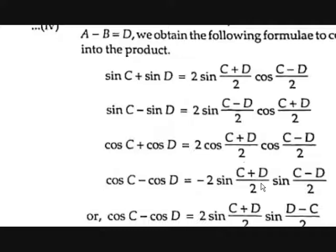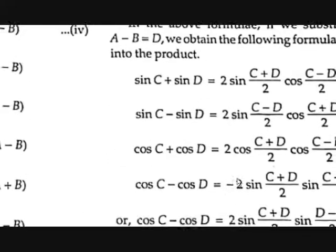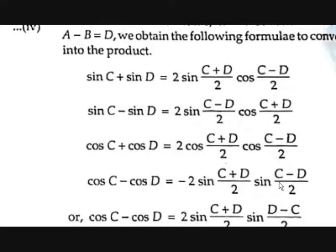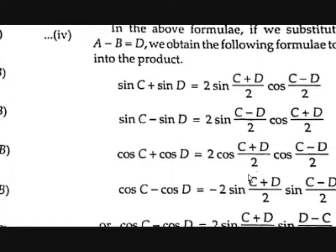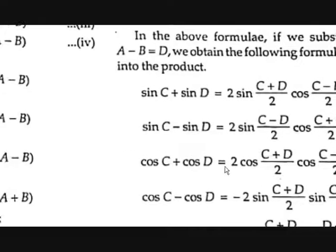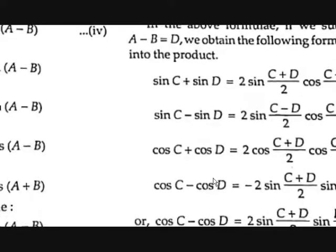To handle the negative sign, we use the identity sin(−A) = −sin A, so the minus goes into the argument: −sin[(C−D)/2] = sin[(D−C)/2]. Therefore cos C − cos D = 2 sin[(C+D)/2] sin[(D−C)/2]. We now have 4 formulas for sin A + sin B, sin A − sin B, cos A + cos B, and cos A − cos B.